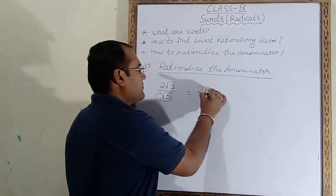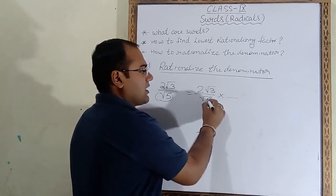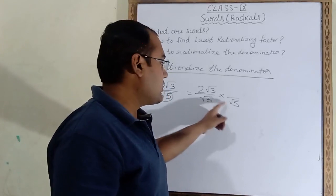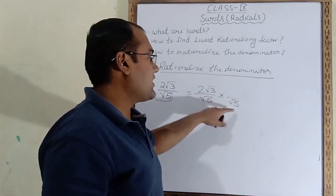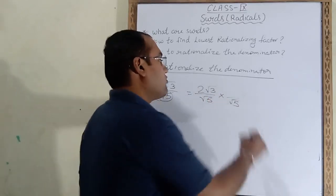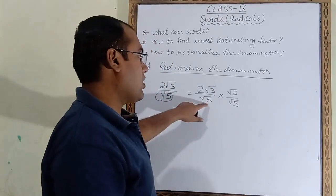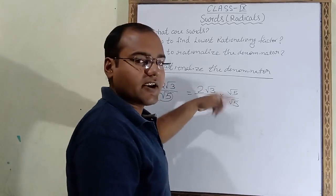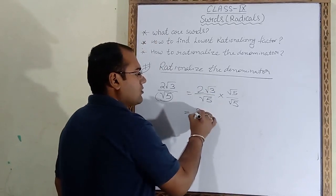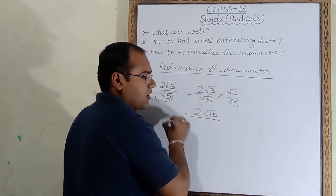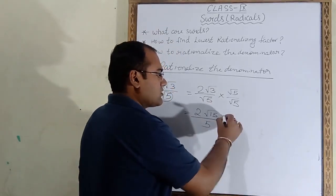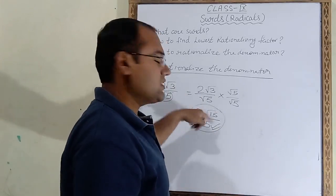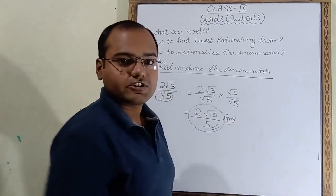Multiplying numerator and denominator by √5: (2√3 × √5) / (√5 × √5) = 2√15 / 5. In the denominator, 5 is now a rational number. So we have rationalized the denominator. The answer is 2√15 / 5.